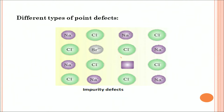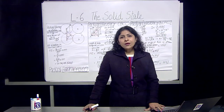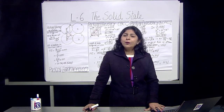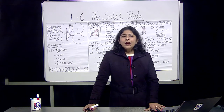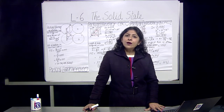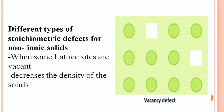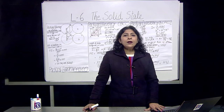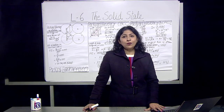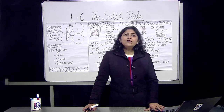The first is impurity defect. In a crystal of sodium chloride, an impurity of strontium chloride can be introduced — strontium appears at a lattice site, creating an impurity point defect. Another type is vacancy defect: some lattice sites are vacant, meaning atoms are missing. This decreases the density of the solid because atoms are absent.